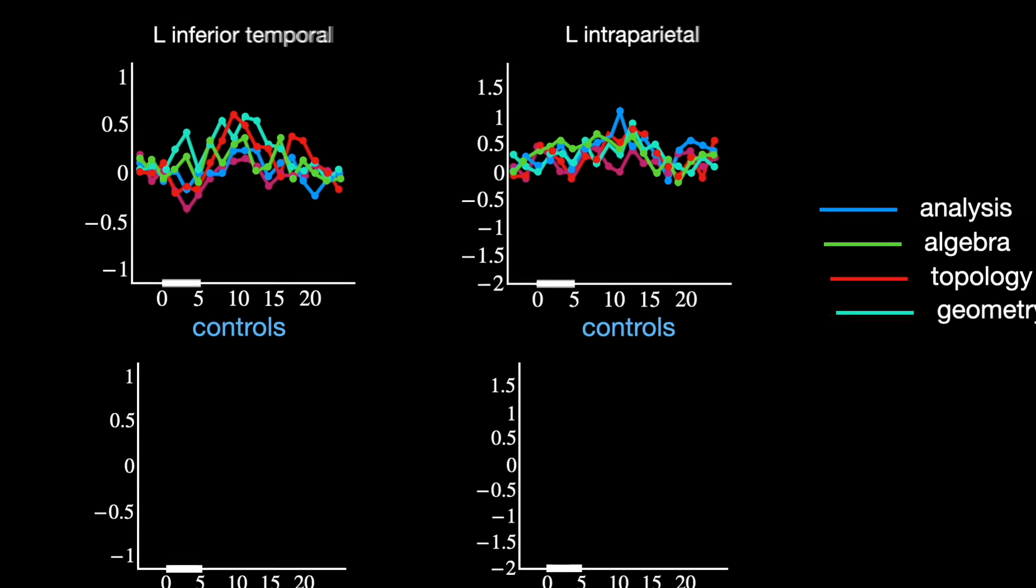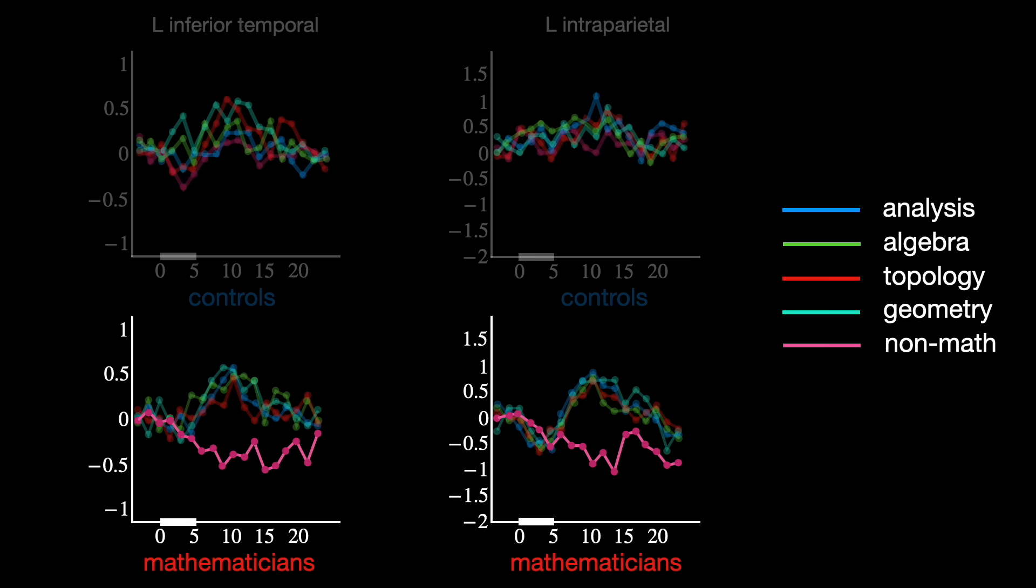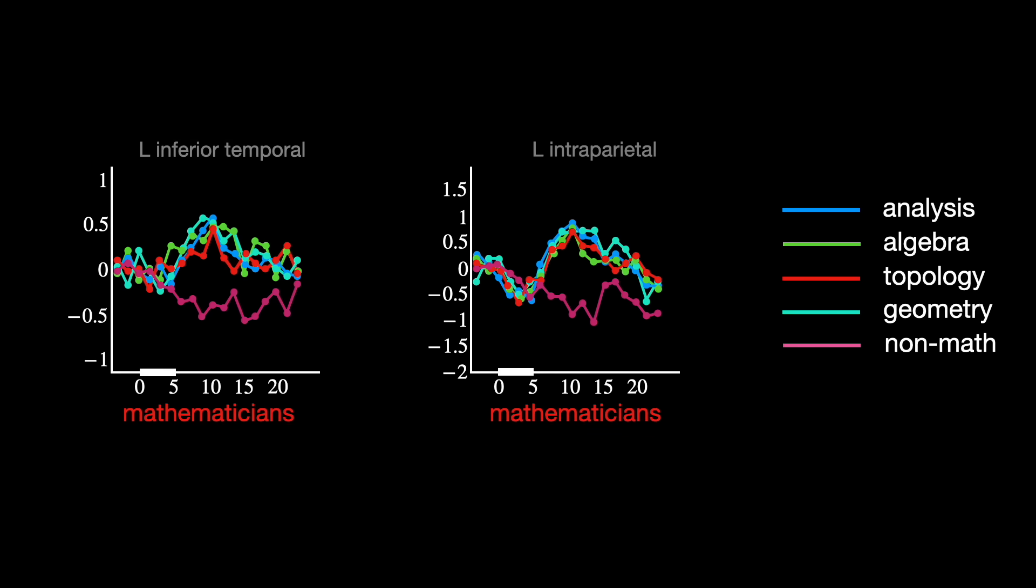Now, look at the mathematicians. While hearing math statements in any field, whether analysis, algebra, topology, or geometry, caused a clear and sustained rise in activation in these brain areas. But non-math statements shifted to other brain regions specialized for general knowledge.